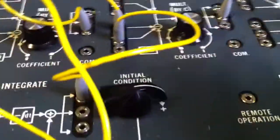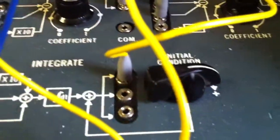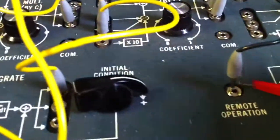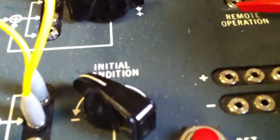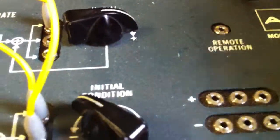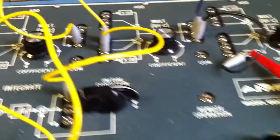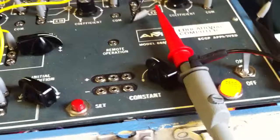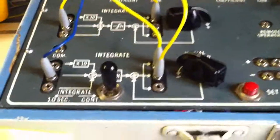Here I am again. So, the signal to observe will be the output of the second integrator. Let me clamp this one to the oscilloscope. OK. Now, everything should be ready. I will switch on the oscilloscope.